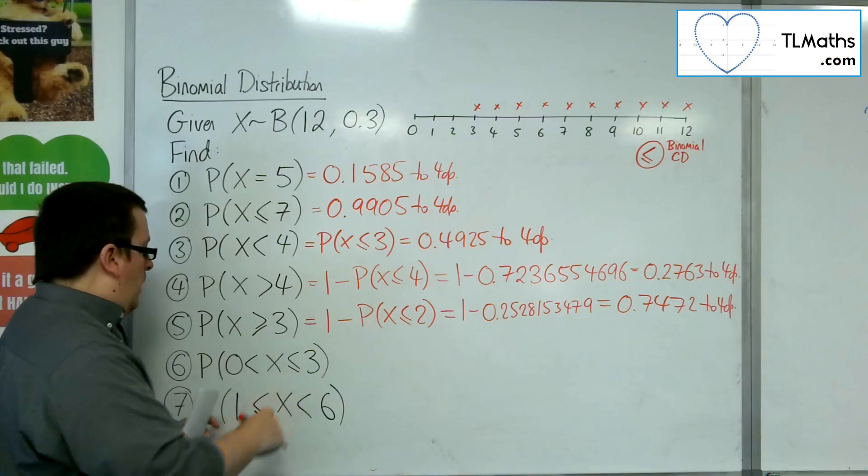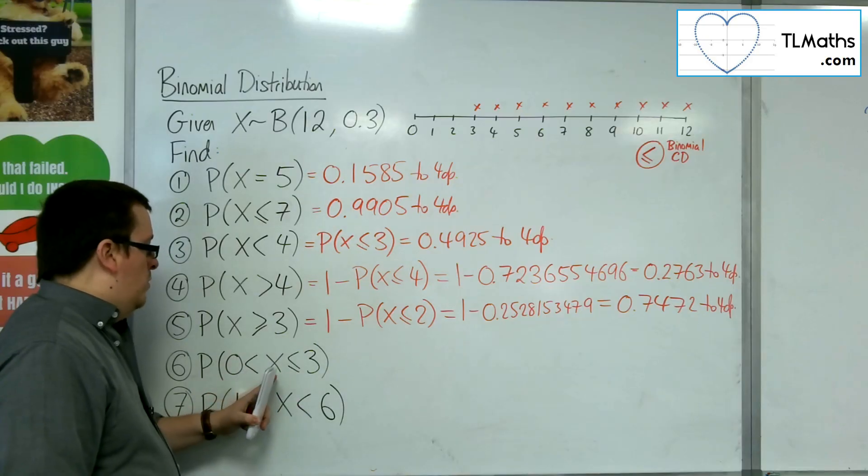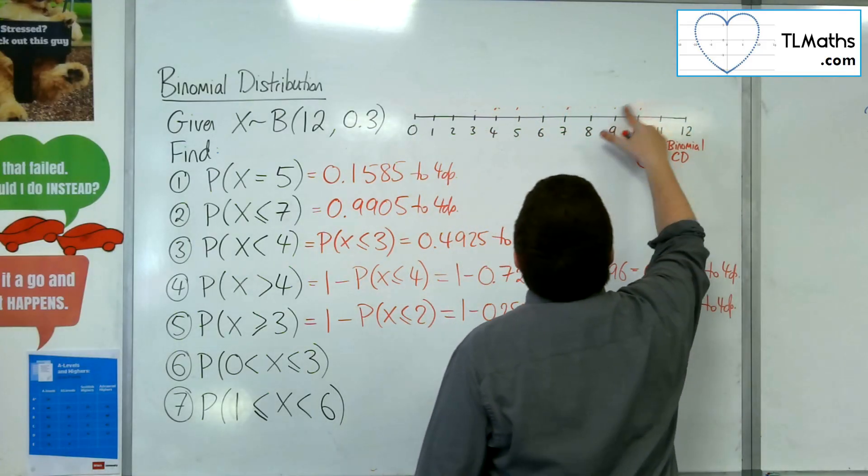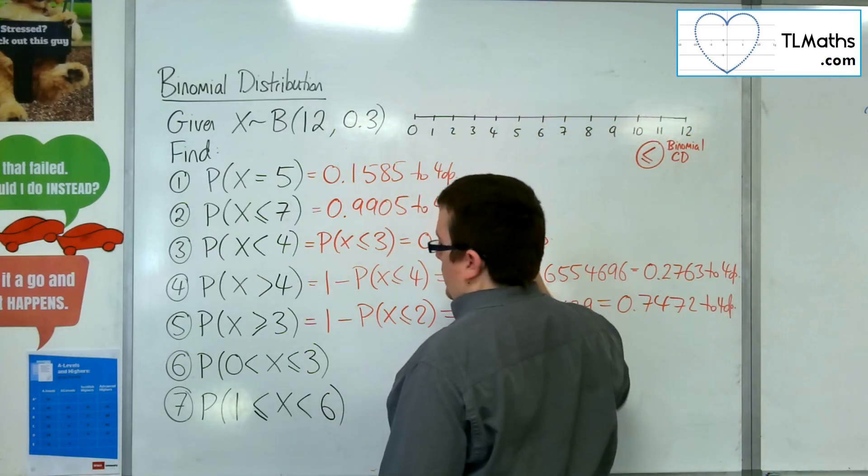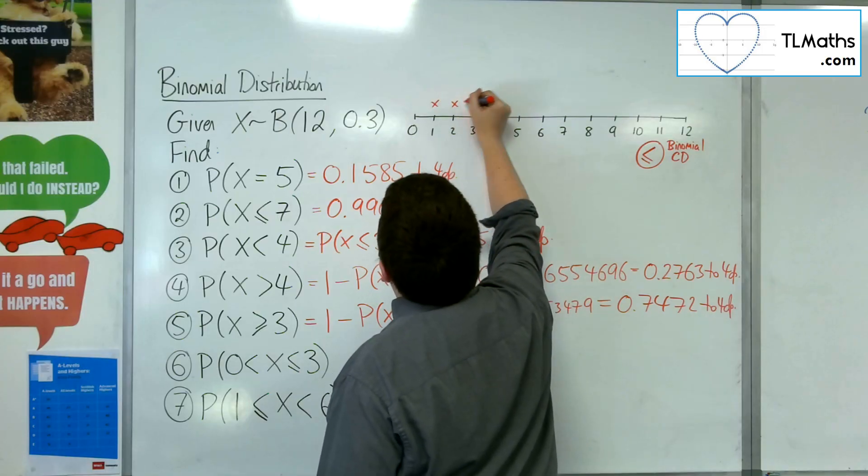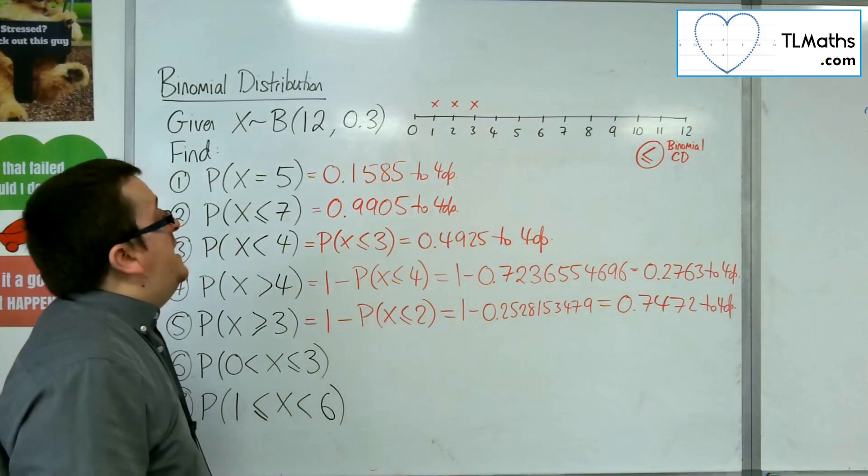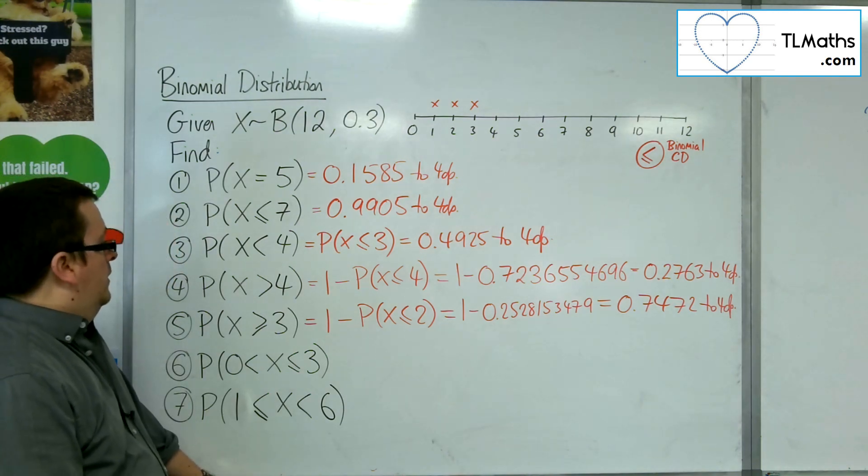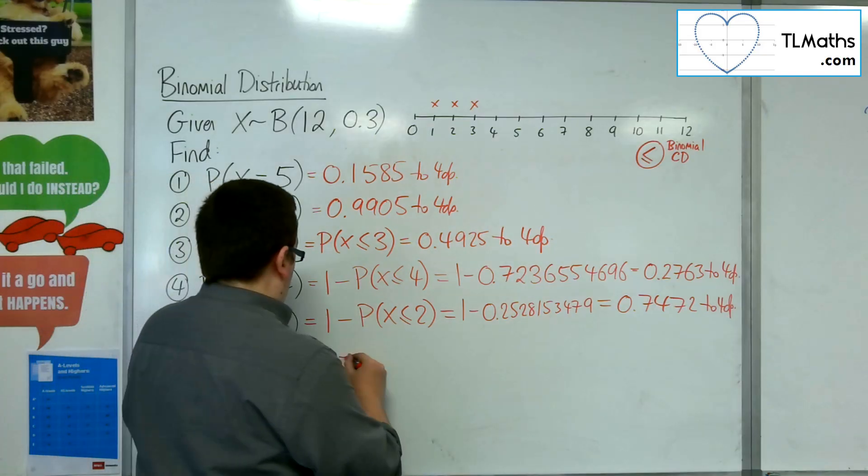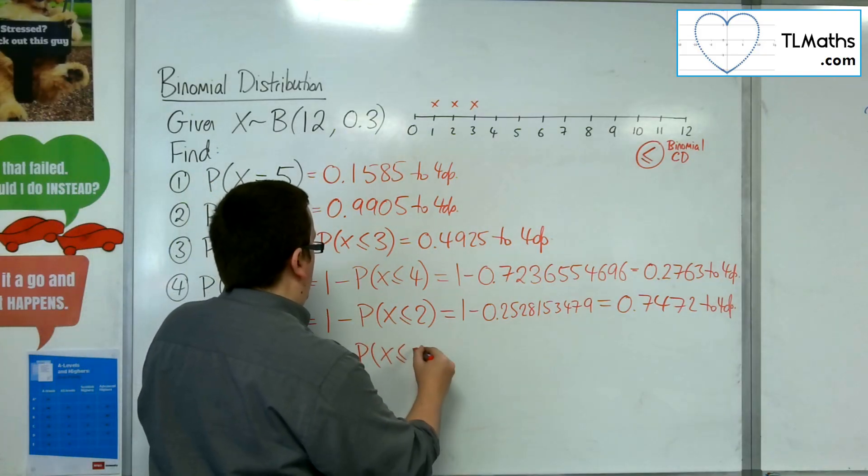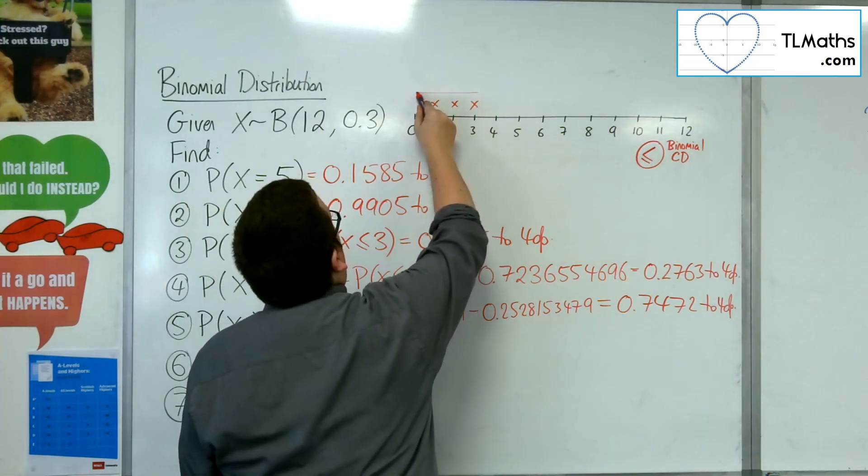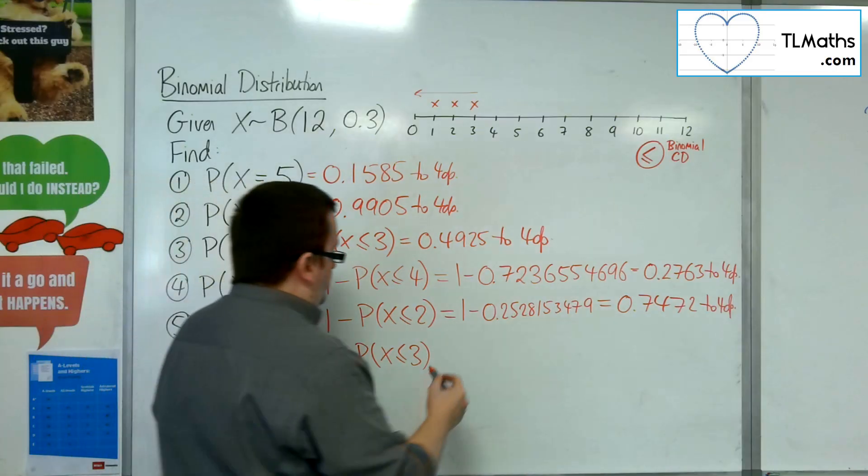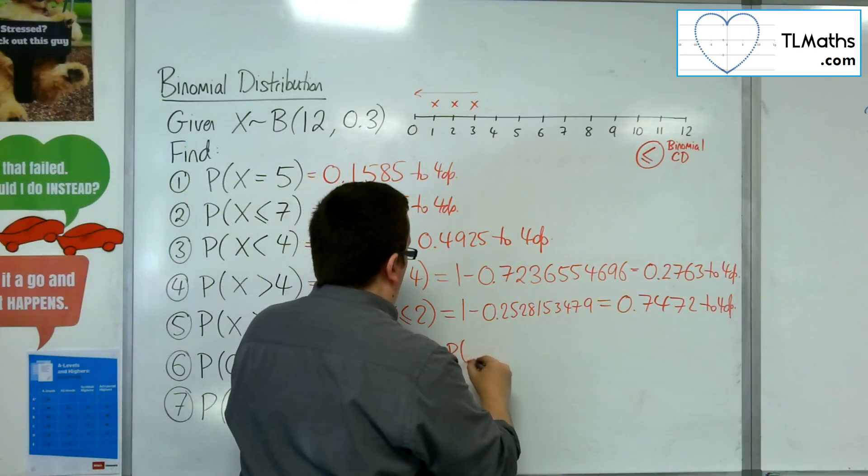Right. Now, the next one is, x is greater than 0, but less than or equal to 3. So, greater than 0, but less than or equal to 3 would be those three data items there. Those three points. So, that should be the same, then, as the probability of x being less than or equal to 3. So, all four of those, and then take away the one I don't want, which is the 0. So, take away the probability of x being less than or equal to 0.